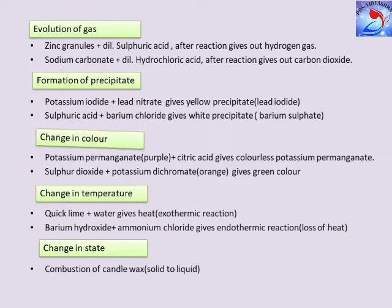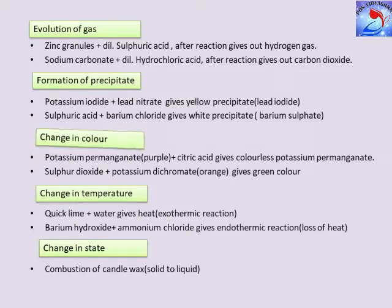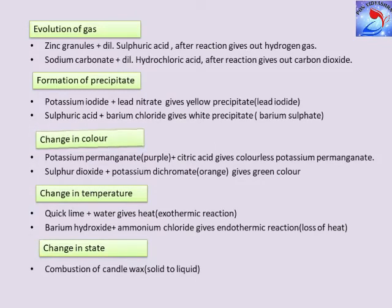Change in color: potassium permanganate, whose color is purple, when added with citric acid gives colorless potassium permanganate — the purple color is turned colorless. Next, sulfur dioxide plus potassium dichromate: potassium dichromate is orange in color, but when sulfur dioxide is added to it, it gives a green color.